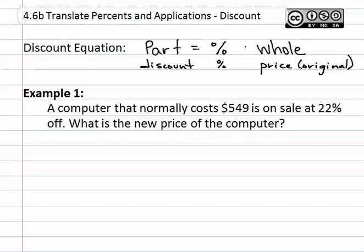We must first determine what the pieces are that it has given us so far. We see that we have $549 and it says that this is what it normally costs. This means that this would be our price or our original price. It then says that it is 22 percent off, which means it is a discount. And finally, it asks what is the new price of the computer? There will be multiple steps to a problem such as this.